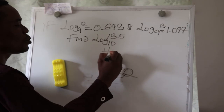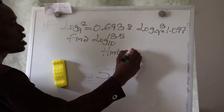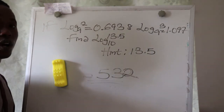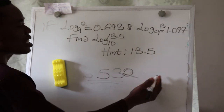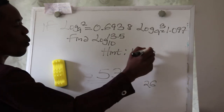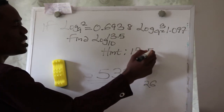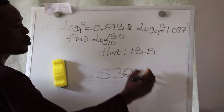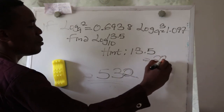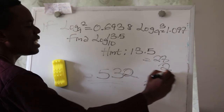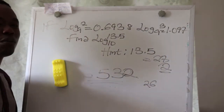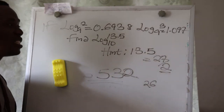As a hint, you have to change 13.5 to a fraction. 13 times 2 gives 26, and the remaining 0.5 gives us 27 divided by 2. So the fraction you use to replace 13.5 is 27 over 2.